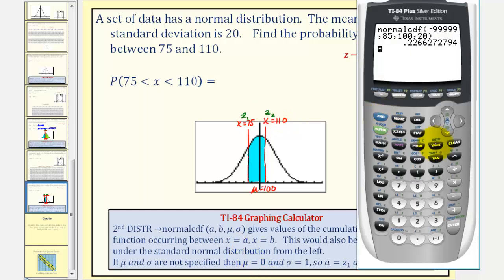We can press 2nd VARS, option 2. Our lower bound data value is now 75. So 75, comma, upper bound data value is 110, the mean of 100, comma, the standard deviation, close parenthesis, enter. So the probability that X is between 75 and 110 is approximately 0.5858.